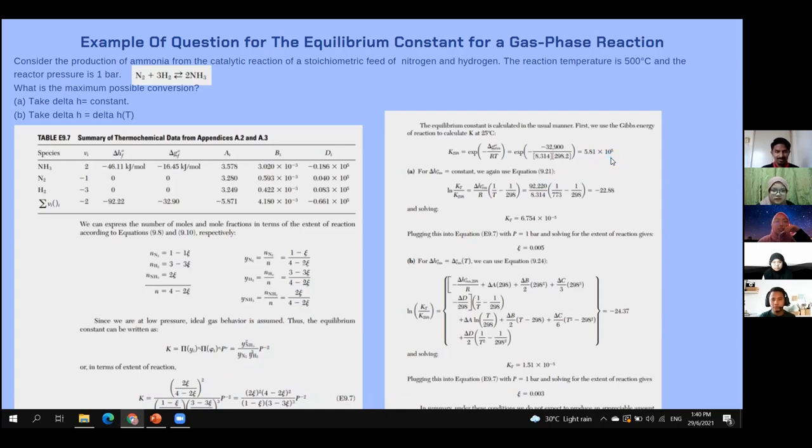For the equation A, the equation asks you to take delta H equal to constant, where you can find here that the ln Kt over K at 298, the equation is using the van't Hoff equation, and you substitute the value, and you will get negative 22.88, and you will get Kt equal to 6.754 times 10 to the power of negative 5.